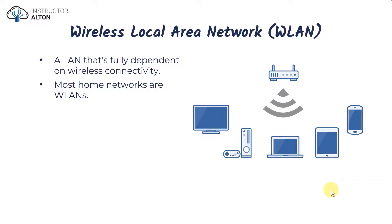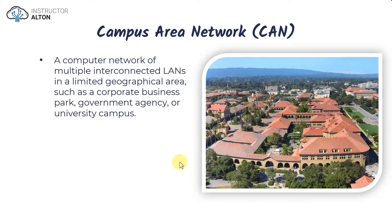If we have a local area network that is completely wireless — where devices connect to a wireless access point or wireless router — that is a wireless LAN, or WLAN. In a home where a smart TV, Xbox, laptop, tablet, and phone all connect wirelessly, that's a wireless local area network.